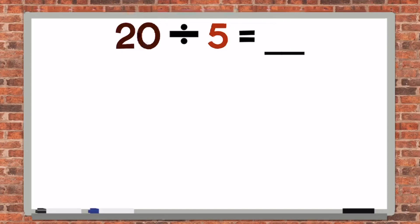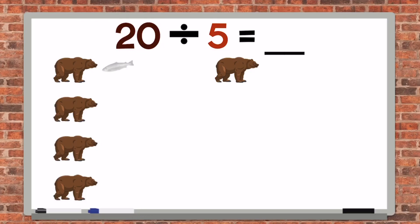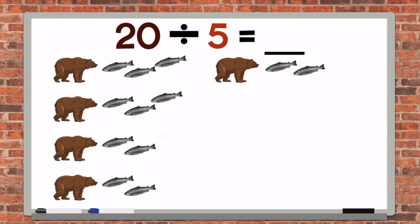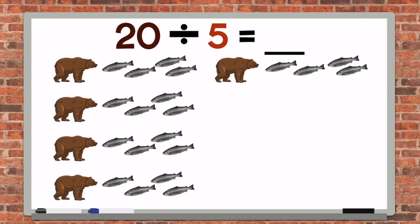20 divided by 5. We can think of that as 20 salmon divided by 5 grizzly bears. We'll start by drawing the 5 grizzly bears. Let's count to 20 until we run out of salmon. We notice that each grizzly bear is going to get 4 salmon to eat. 20 salmon divided by 5 grizzly bears equals 4 salmon each.